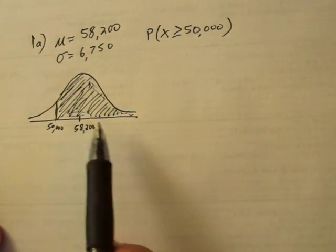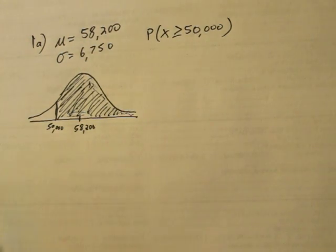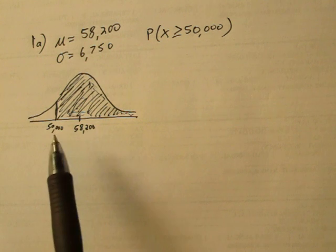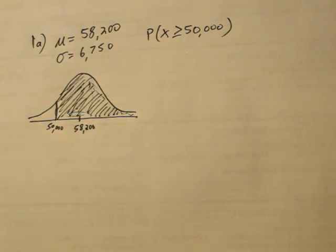Remember, the entire area here is 1. Looking at that really quick, a good estimate might be somewhere around 80%, so 0.8 might be our probability.